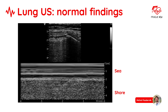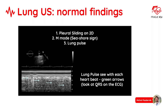The motionless superficial layers generate horizontal lines — the waves. The deep artefact follows the lung sliding, hence the sandy pattern. Another sign of normally aerated lung is the presence of lung pulse, which is the rhythmic movement of the pleura in synchrony with the cardiac rhythm. See the green arrows after each QRS complex.